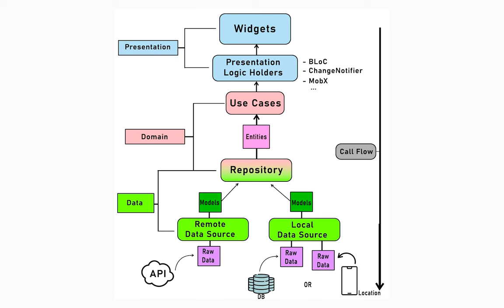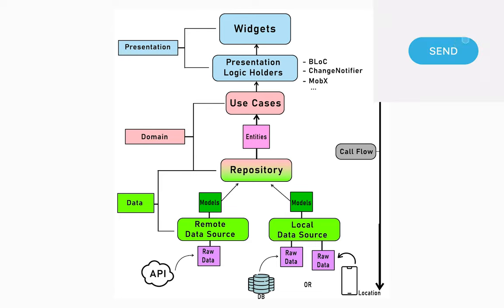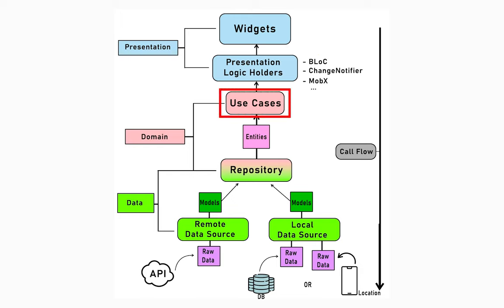Now let's take a quick recap of clean architecture. We will be interacting with our app through the outermost layer, which is the presentation layer. When a button is clicked, the call flow goes from widgets to the presentation logic holders such as Bloc, Cubit, etc. And from there, they depend upon the use cases.